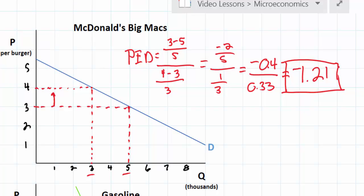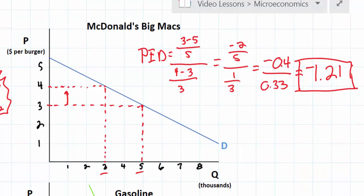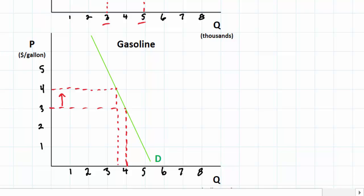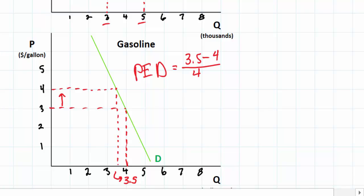Now let's calculate the PED for gasoline between three dollars and four dollars using the same method. Q2 is 3.5 million gallons, so we take 3.5 minus 4 and divide by the original quantity of four. We can use the same percent change in price as before since the price also increases from three to four dollars, which is a 33 percent increase, so 0.33 goes in the denominator.